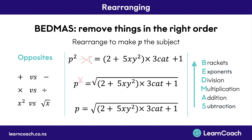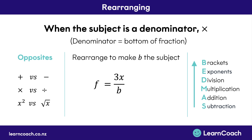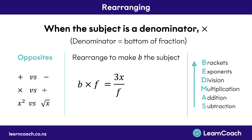There's one more type of exception to know about. This exception is when the subject is a denominator — meaning it's on the bottom of a fraction. If we look at this question where we want to make b the subject, the first thing we do is get rid of the divided by b by multiplying by b on the opposite side. That cancels it out of the denominator. Now we follow normal rules: b is multiplied by f, so the opposite is divided by f on the other side. Written neatly: b equals 3x divided by f.